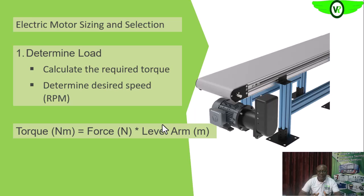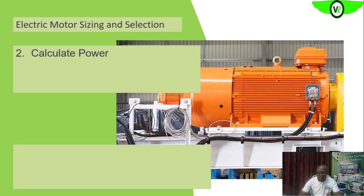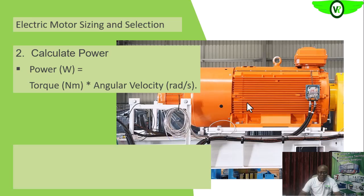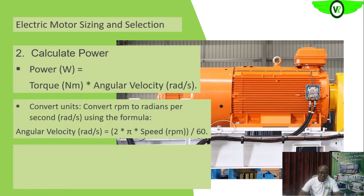Now you have the load and the torque. The next step is the speed required — for example, if you want the conveyor belt to run at two meters per second, that will determine your RPM. If you are using a gear system, you have to consider the gear ratio to determine the speed of the electric motor. Next, calculate the power: the power equals torque times angular velocity.